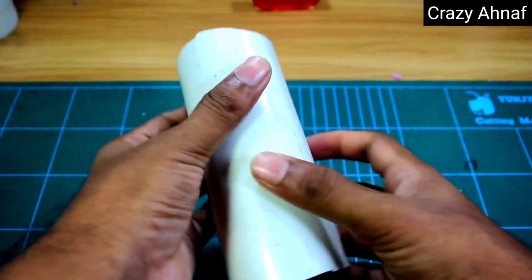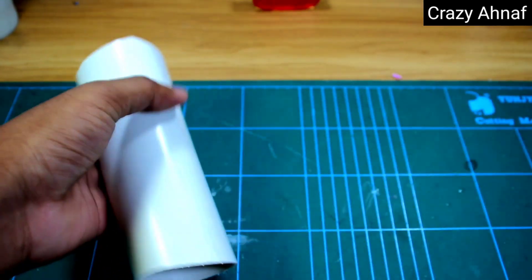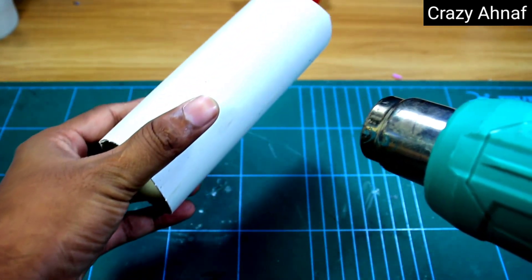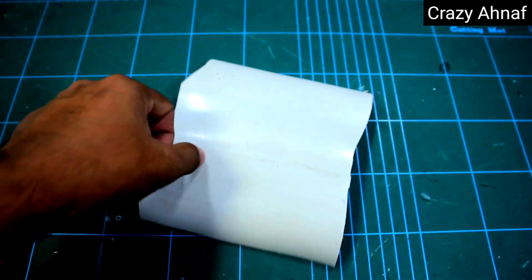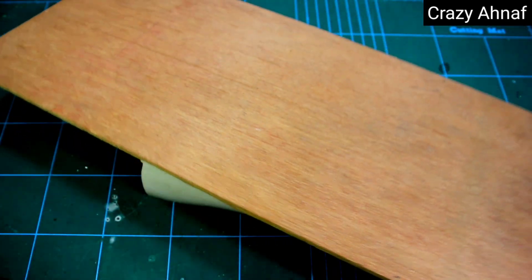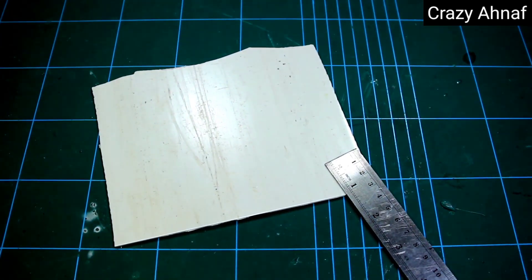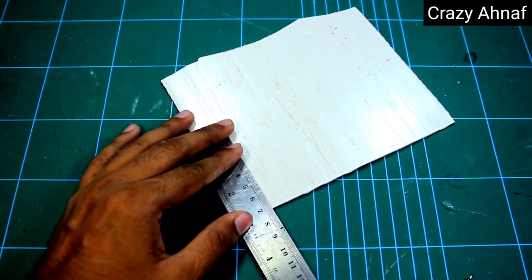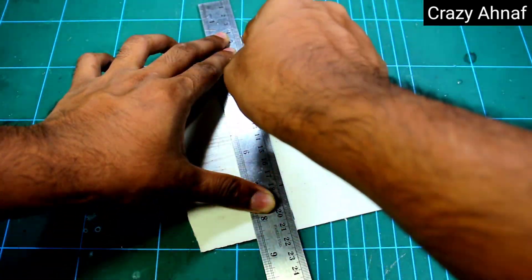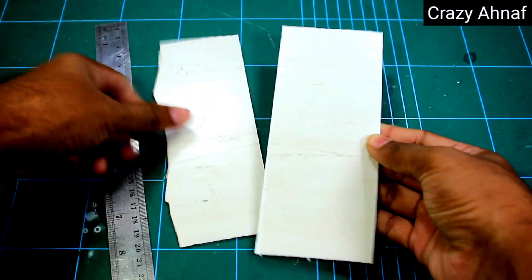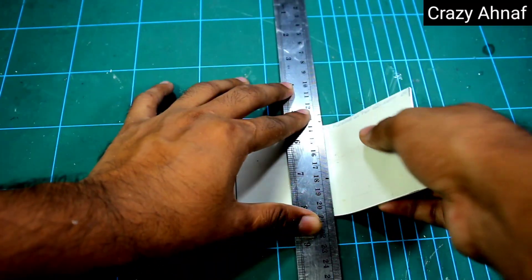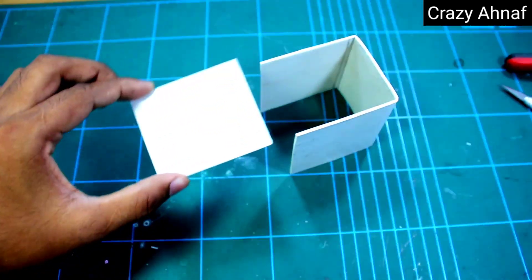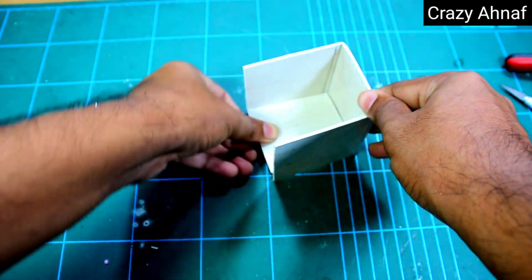To make the battery first we have to make a sheet from the PVC pipe. First I will select a box to make the battery.